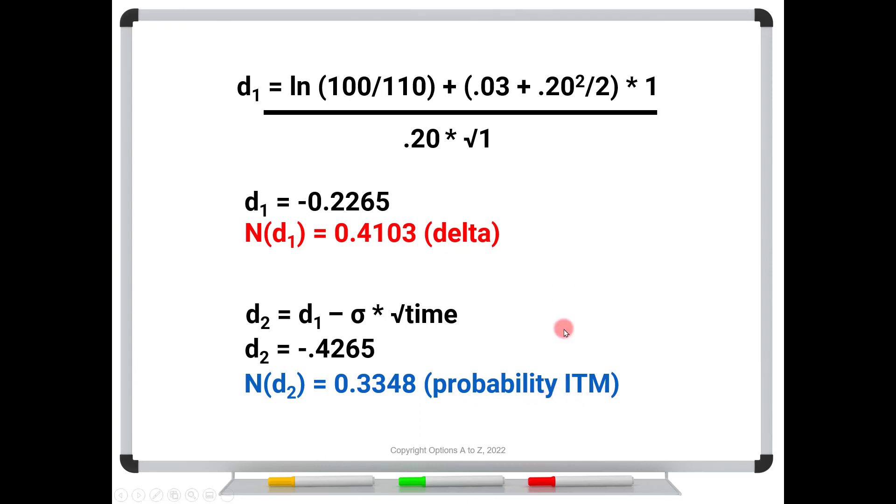What you need to know, you don't need to know all of these steps, but what you need to know is that if you go through these calculations, this is an out of the money option. Look at the true probability of going in the money is only about 33%. But the delta is 41. You're a good seven percentage points off. This would give you the impression that there's a better chance for this option to go in the money than there really is.